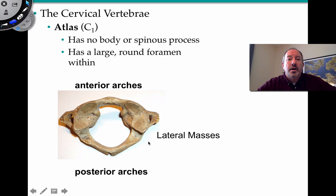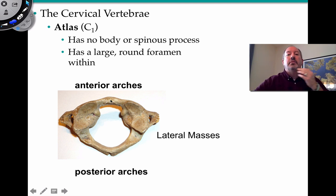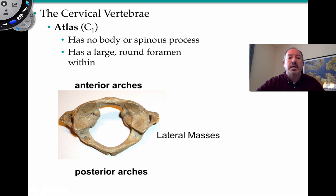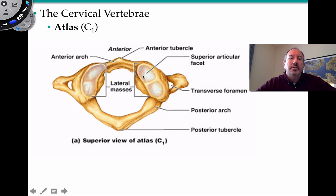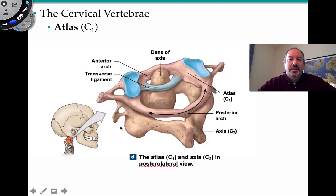The atlas has unique characteristics: it has no body and no spinous process, and it has a very large round foramen. It has lateral masses that articulate with the occipital condyles, allowing the skull to rotate on these two pads. There's an anterior and a posterior notch, as well as a posterior tubercle — a small outgrowth in the back.